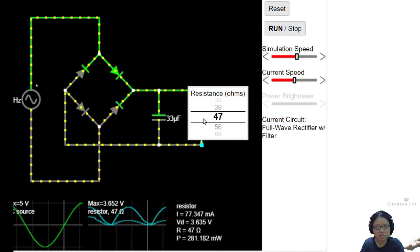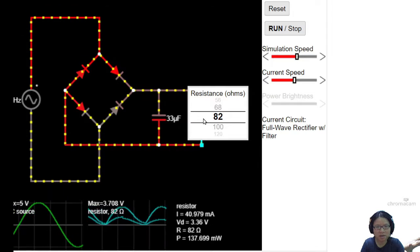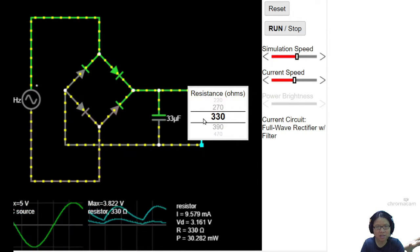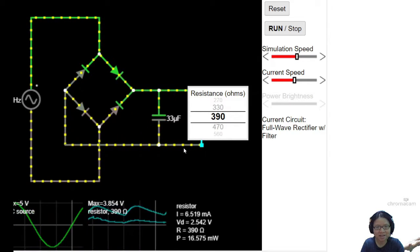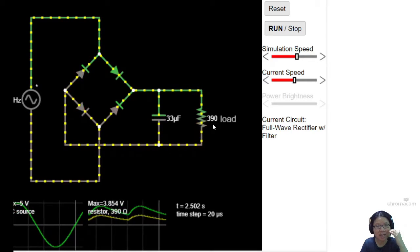So if I increase the resistance, you can see you will finally get a more stable current supply. Now we get the shape that we want. There. Finally. See this?